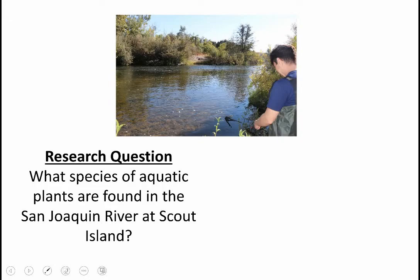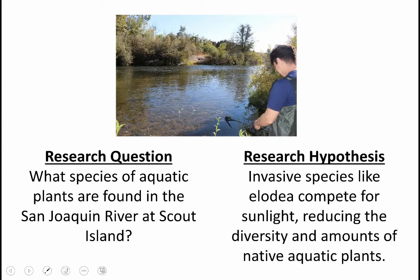This is a photograph of the San Joaquin River. A research question about plant life there may simply be: what species of aquatic plants are found on the San Joaquin River at Scout Island? We've defined a region, we're looking for aquatic plants, but we don't know what's there — we're going to go in, inventory, collect, classify, and document what's present. A different research project with more prior observation might look at how invasive species like Elodea compete for sunlight. There's a theory that if one plant is above another and absorbing the light, it doesn't reach the other, which would reduce the diversity and amounts of native aquatic plant species.